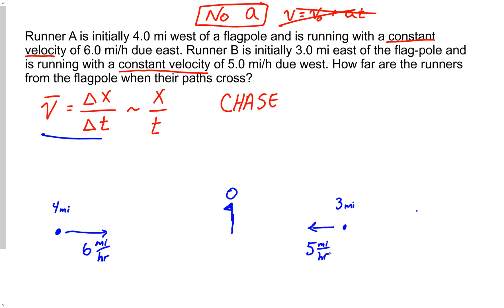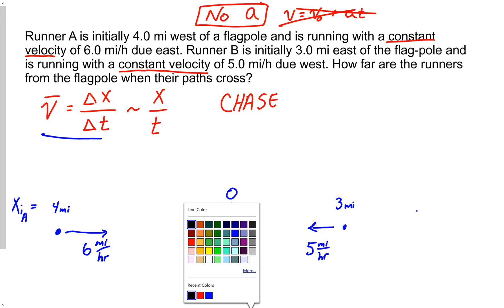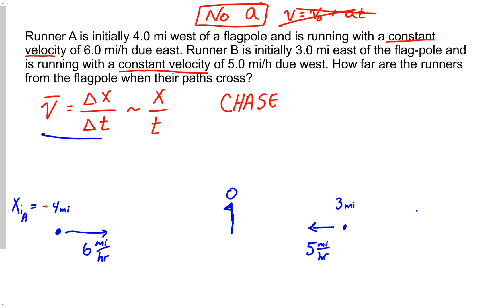This is where vectors come into play. I've got a coordinate system with the flagpole at zero. So x-initial for runner A — and this is very important — if the flagpole is my zero reference, then x-initial for runner A is negative four. That also means x-initial for runner B is positive three. The average velocity for runner A is positive six because it's going to the right, and the average velocity for runner B is negative five.